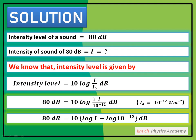80 dB = 10 log(I / 10⁻¹²) dB۔ log(a/b) = log a − log b کا formula لگائیں گے، تو یہ بن جائے گا: 10[log I − log 10⁻¹²] dB۔